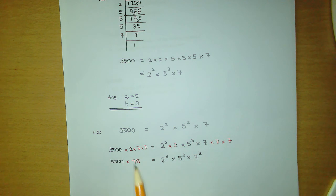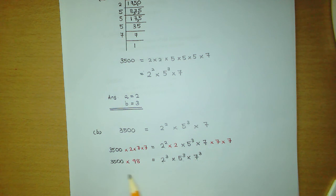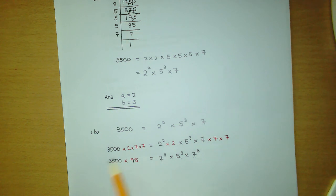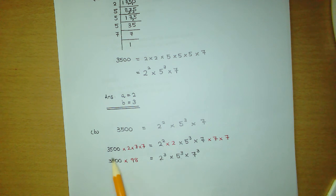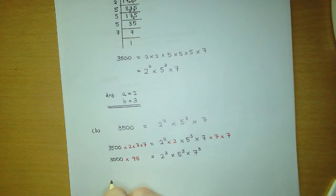What we have on the right-hand side is a product of cube numbers — numbers with powers of 3 — so overall it is a cube number. We're not asked to find the cube number itself; we're asked for the smallest value we have to multiply 3500 by to get a cube number. That value is 98, so our final answer is 98.